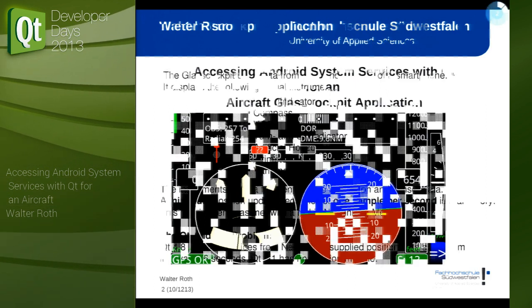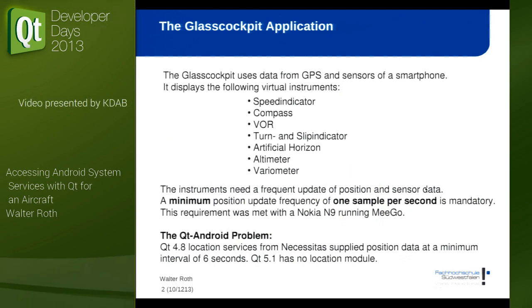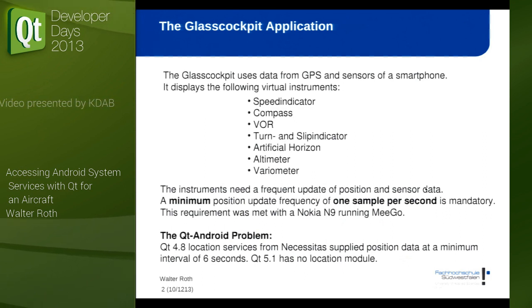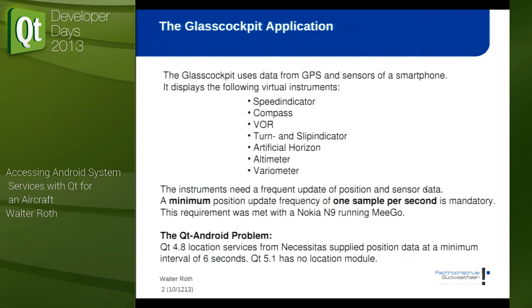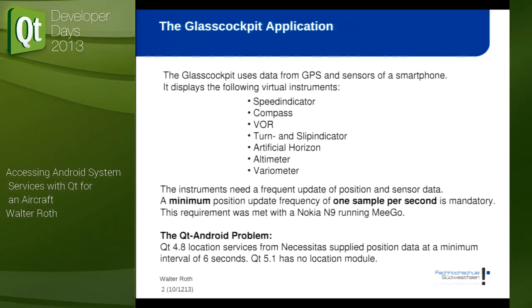The glass cockpit has quite a bit of flight instruments in it, most importantly the speed indicator. These instruments need a very frequent update of position so that they can calculate things like speed, curve radius, or something like that.